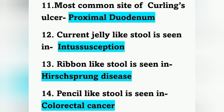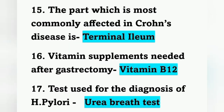Current jelly stool is seen in intussusception. Ribbon stool is seen in Hirschsprung's disease. Pencil stool is seen in colorectal cancer. Current jelly stool is the characteristic feature of intussusception; ribbon stool is seen in Hirschsprung's disease; pencil stool is seen in colorectal cancer.